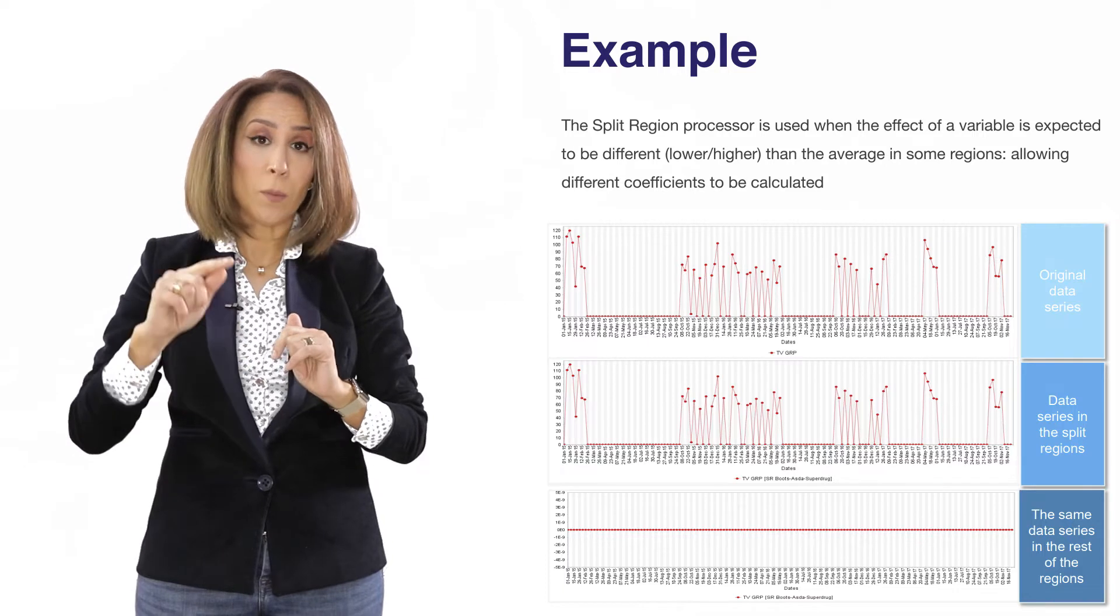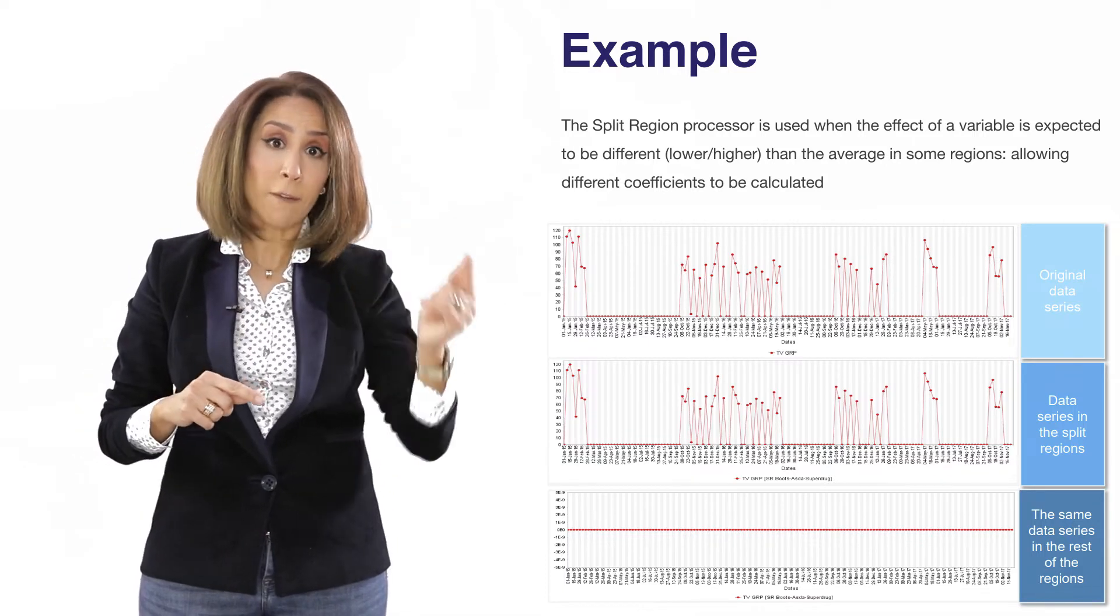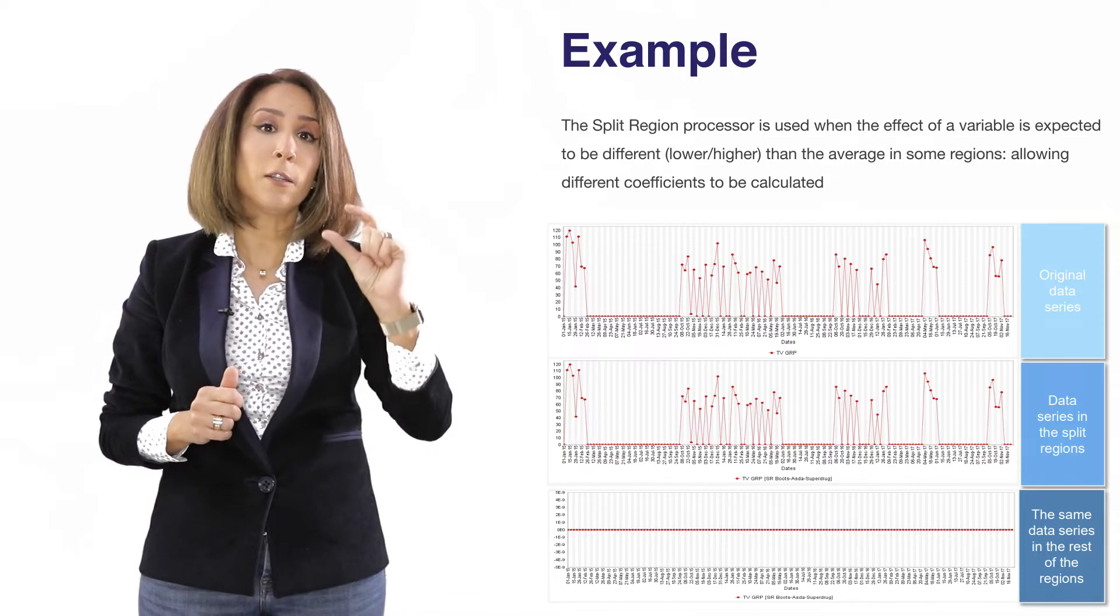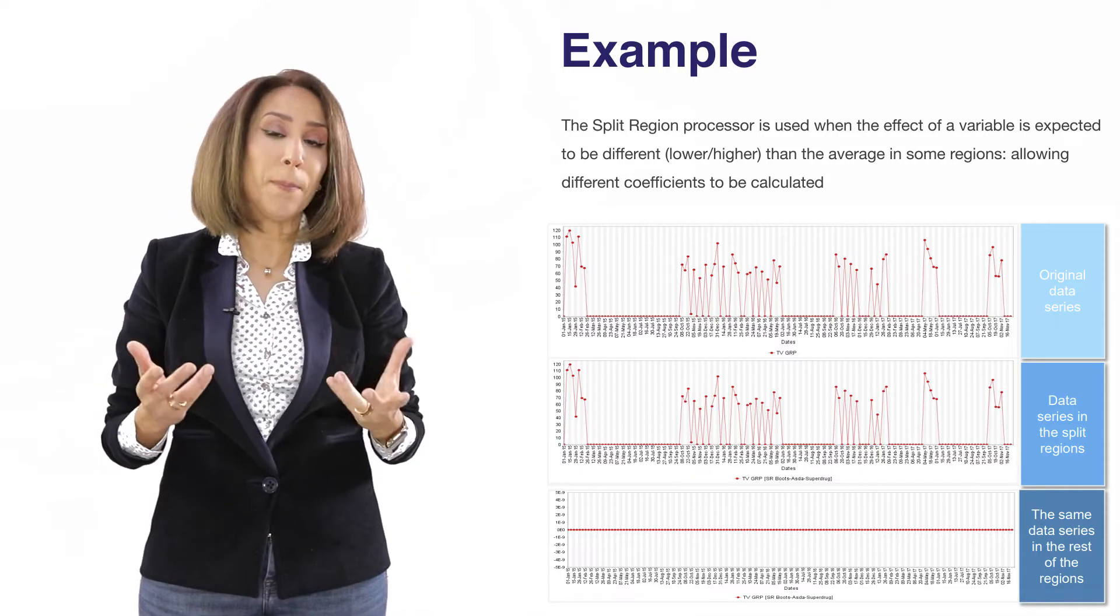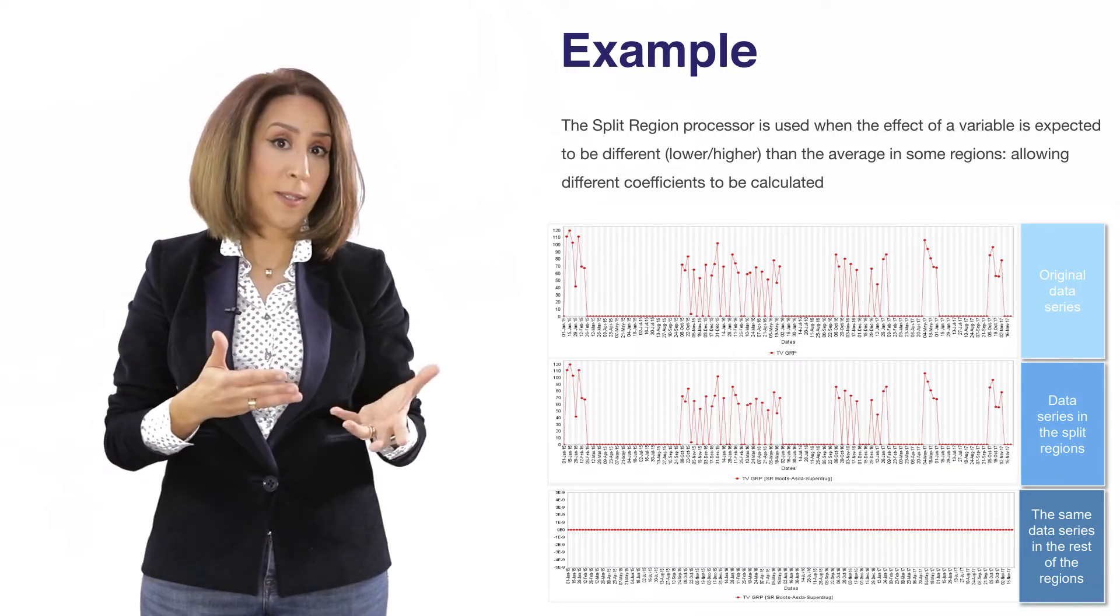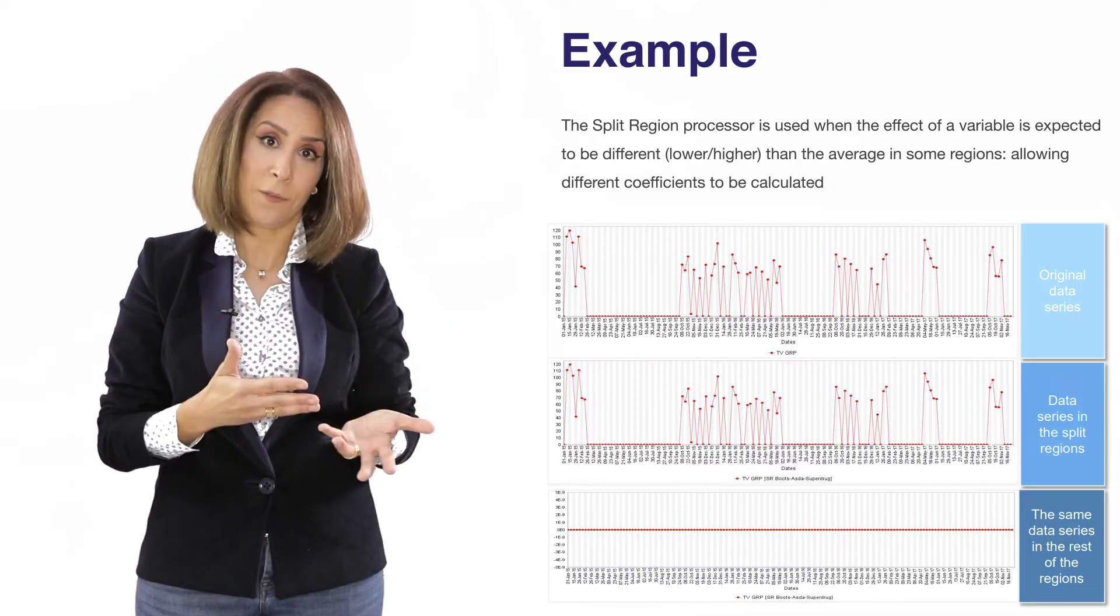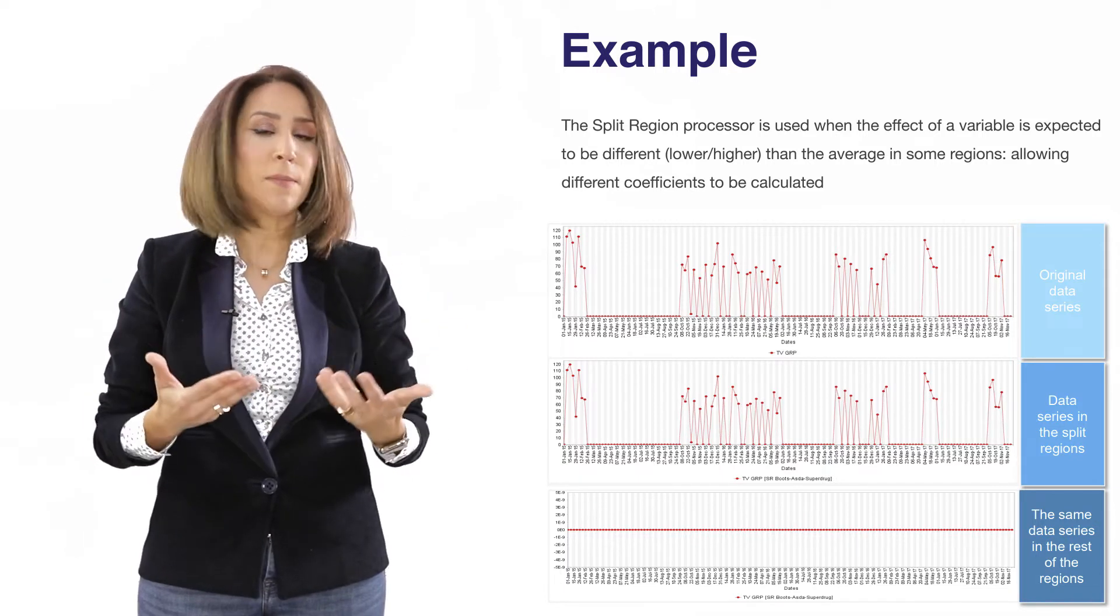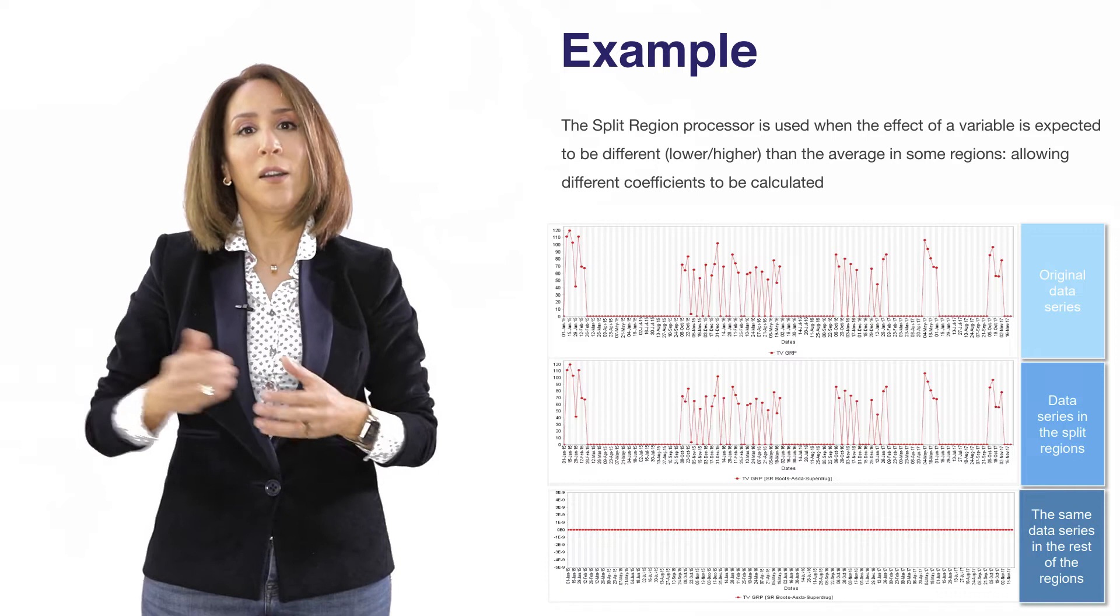Now the coefficient that will be measured later on in the modeling phase for the price variable that has been created for the north region will depict the sensitivity of the north region when it comes to prices that could potentially be different from the average price elasticity that is measured with all the other regions.